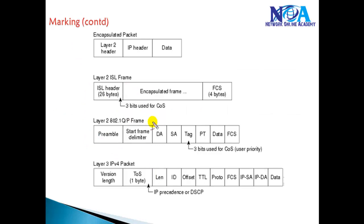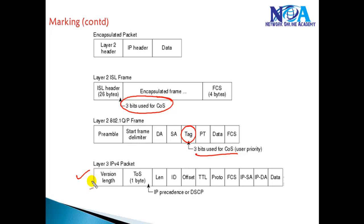This marking information is added inside the packet header. In a Layer 2 switch network, three bits are reserved for Class of Service. In a dot1Q frame, the priority tag also uses those same three bits of Class of Service. In a Layer 3 IPv4 packet, there is a field called Type of Service which is eight bits wide and is used to carry the marking information.